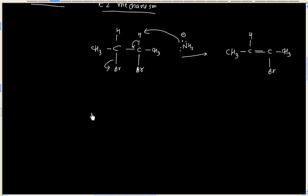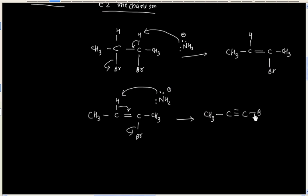In the next step, base takes another acidic hydrogen to generate a triple bond by loss of a leaving group, and leaving group is Br minus. Here also we have Br minus.